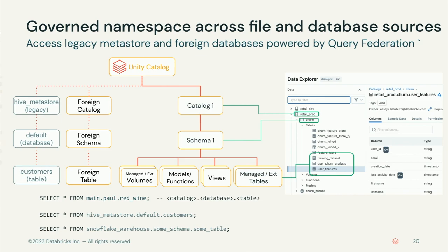This gives you a governed namespace across file and database sources. You can access your legacy Hive Metastore — whether the one that shipped with your Databricks workspace or an external one you manage — your foreign catalogs, and all data formally registered within Unity Catalog, including views, models, functions, arbitrary file containers, and managed and external tables. The beauty is that you can bring everything together into one unified governed access point.